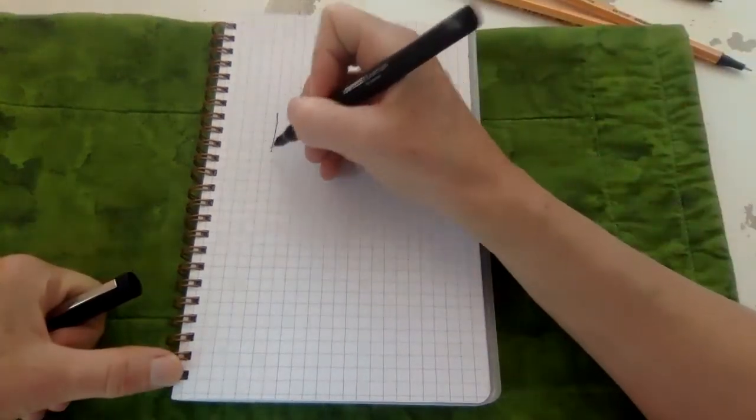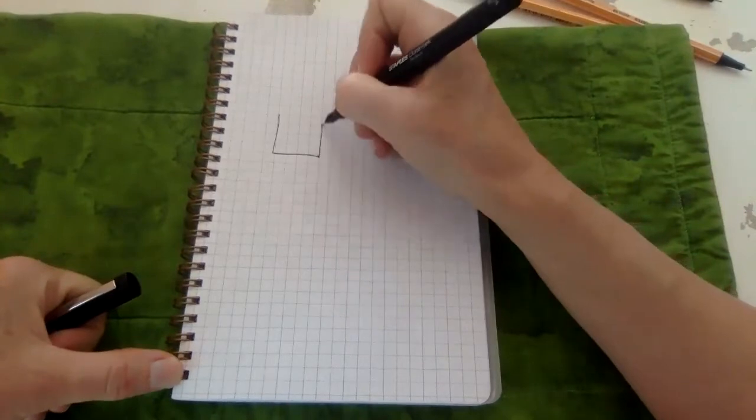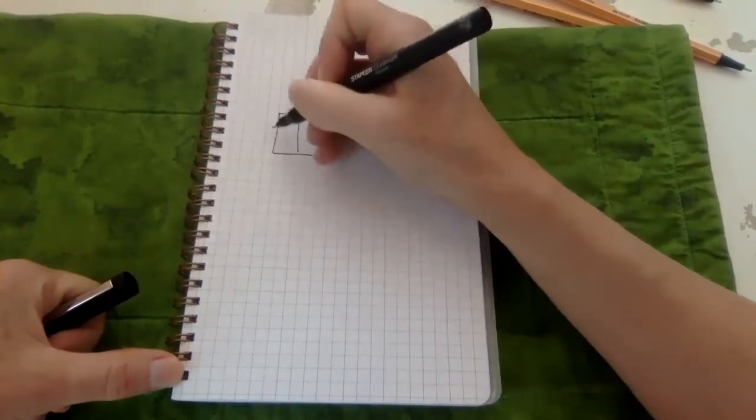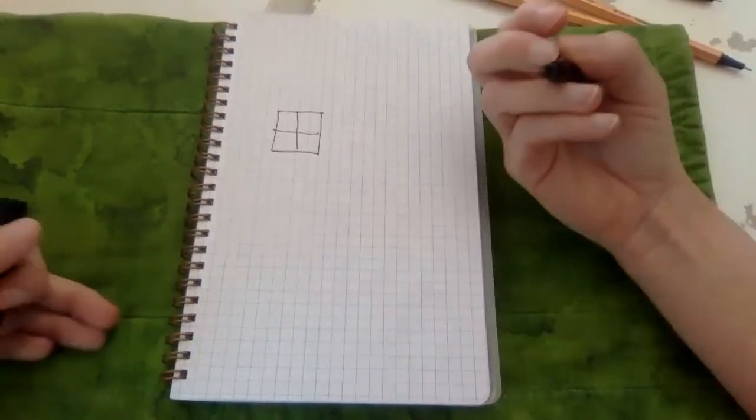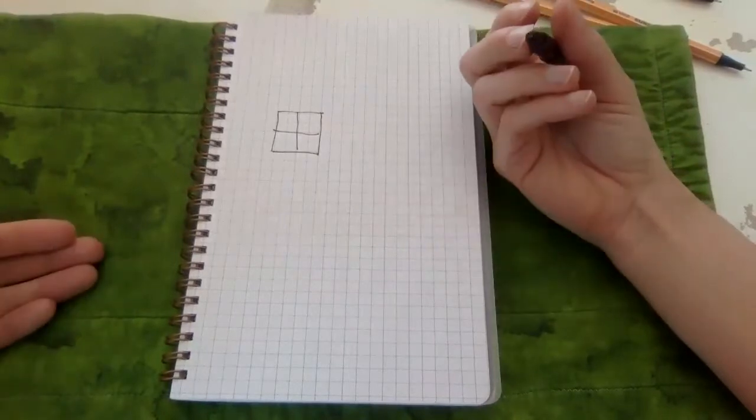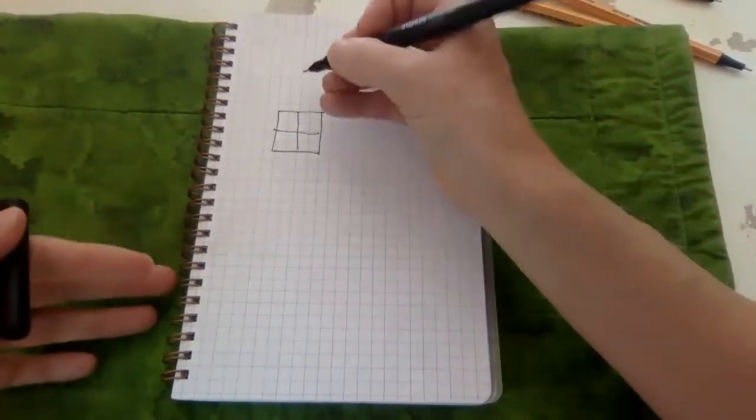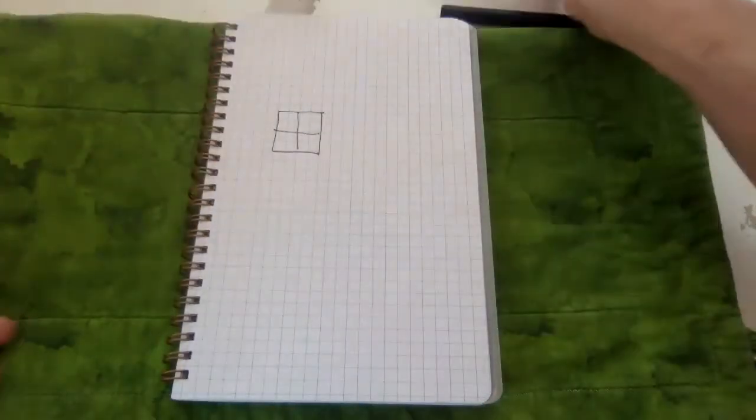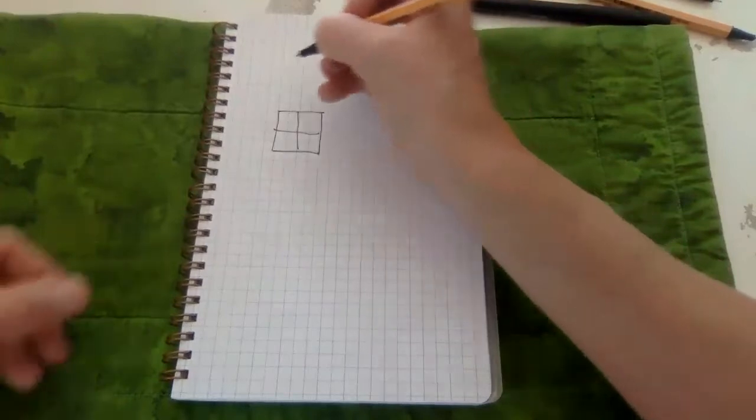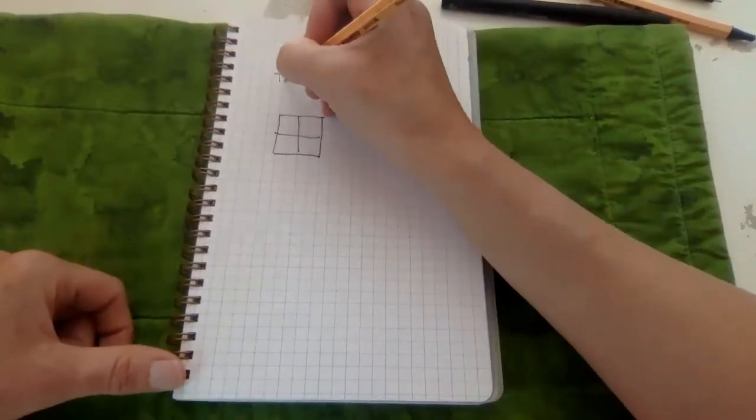Just a reminder, for Punnett squares you're just drawing a square. Mine is a little messy. I would like you to number your squares with the slide number. This is one that doesn't necessarily want to be on your work, so we're not going to worry about that right now. We have a cross that is heterozygous crossed with heterozygous.